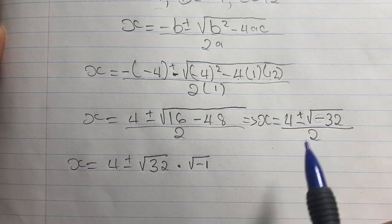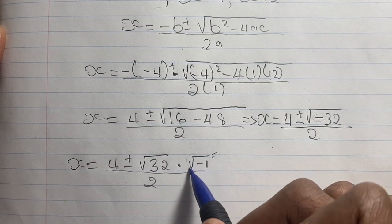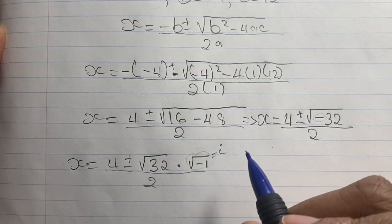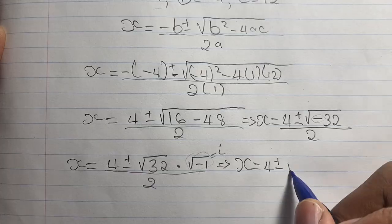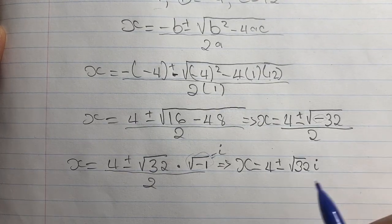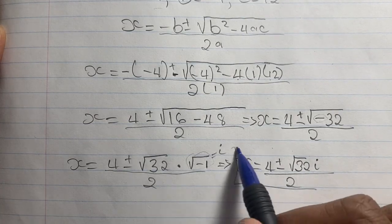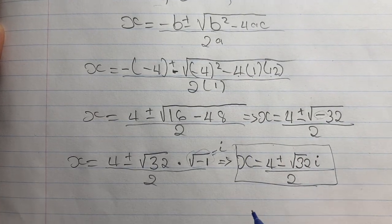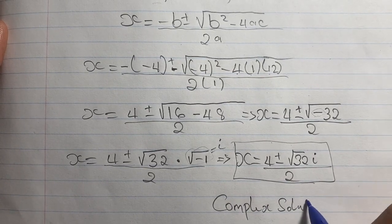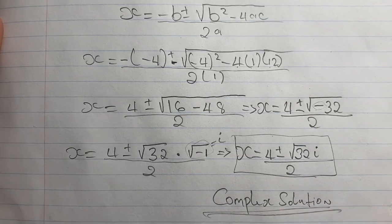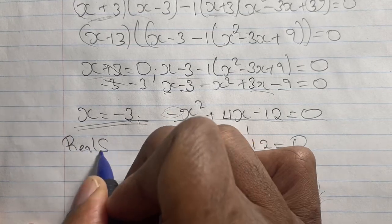We're factoring out the negative 1 here. We know the square root of negative 1 is represented by the imaginary number i. So x equals 4 plus or minus the square root of 32 times i, all over 2. These are two complex solutions, giving us no real solution for x. Going back, our real solution is x equals negative 3.